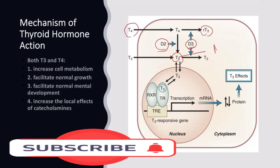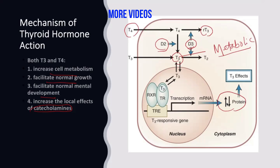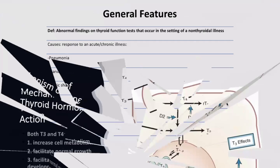T3 is the metabolically active hormone. T3 translocates inside the cell and through transcription and translation synthesizes protein, causing the effects of thyroid hormone — which include increased cell metabolism, normal growth, normal mental development, and increased local effect and sensitivity to catecholamines.